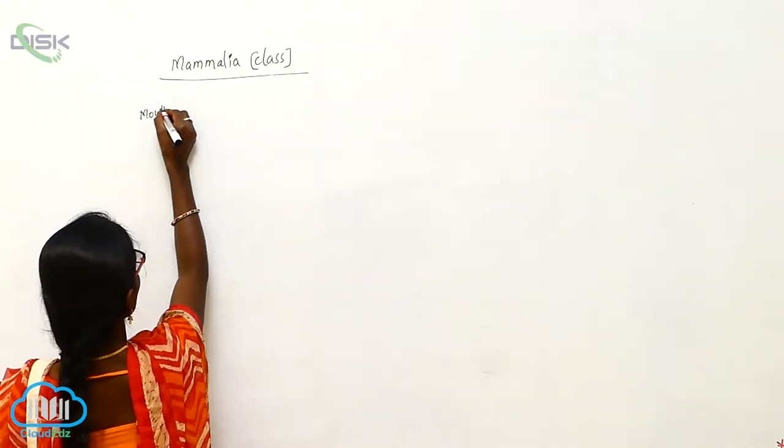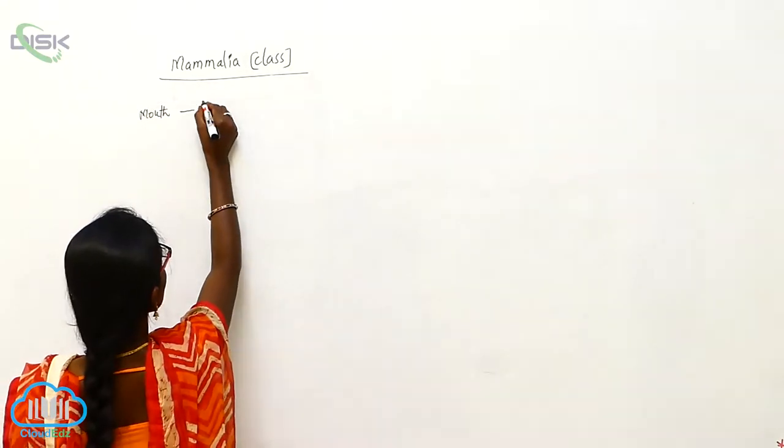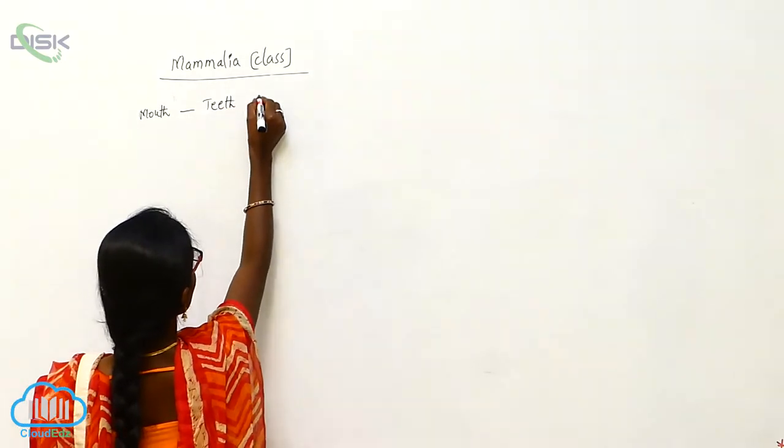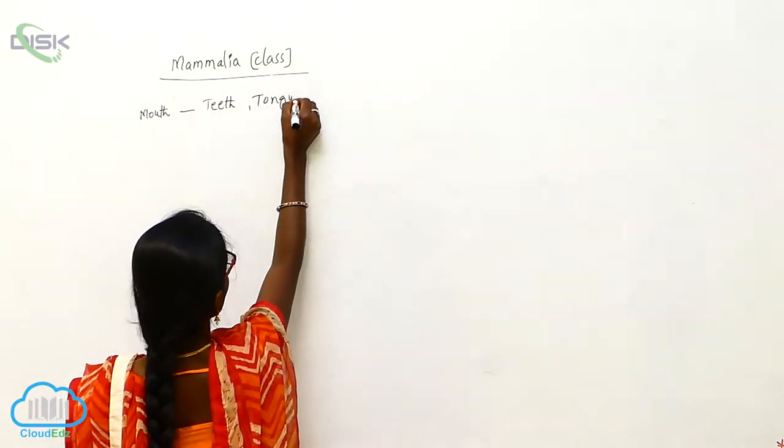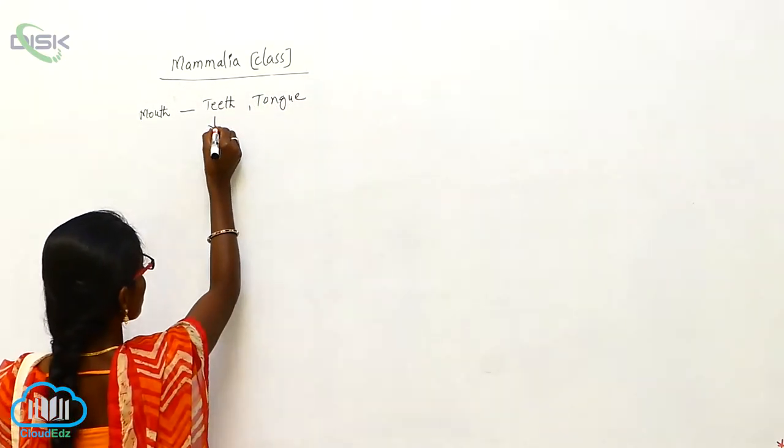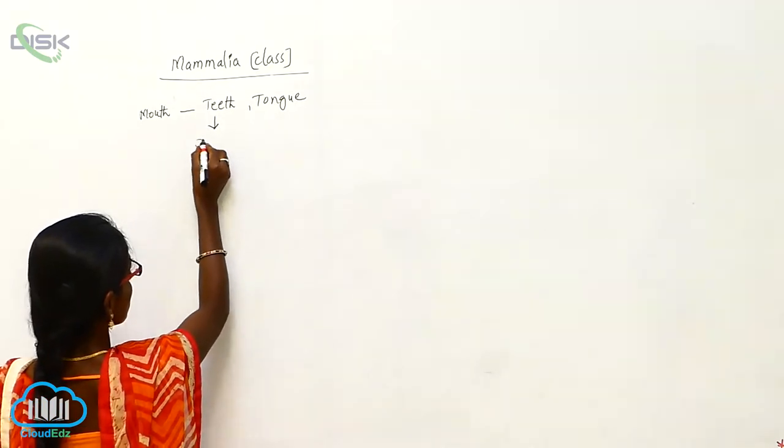So here mouth has teeth, tongue. Teeth are 32.